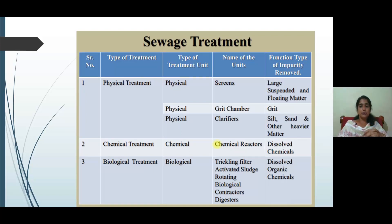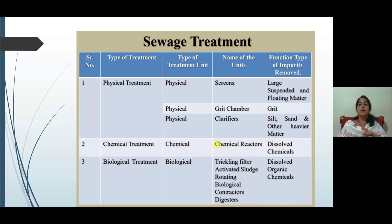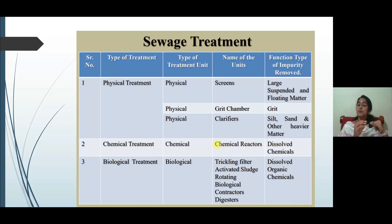This table shows the sewage treatment types. The first column shows the type of treatment — physical treatment, chemical treatment, and biological treatment. In physical treatment, there are three types accepted or designed for a wastewater treatment system: first is screens, generally designed for each sewage treatment plant or effluent treatment plant; second is the grit chamber; and third is clarifiers.